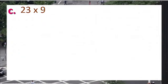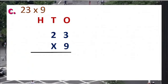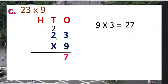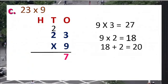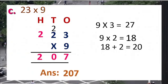23 multiply by 9. First, we are going to arrange the numbers as per the place value chart. So 9 threes are 27. I will write 7 in the one's column. The 2 carry forward to the 10's column. Second step, multiply 9 by 2. Nine twos are 18, plus 2 carry forward, equals 20. I will write 0 in the 10's column. The 2 carry forward to the 100's column. So I will write 2 in the 100's column. We get the product 207. 23 is the multiplicand, 9 is the multiplier, and 207 is the product.